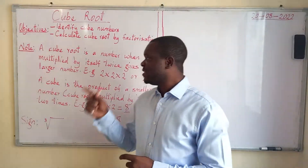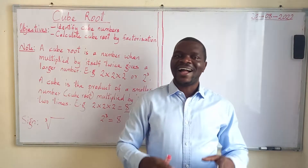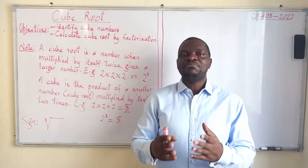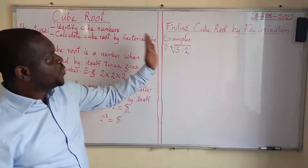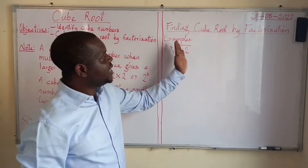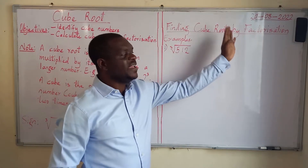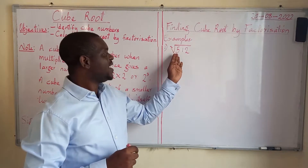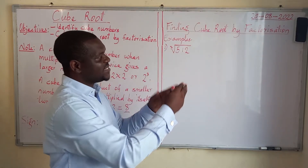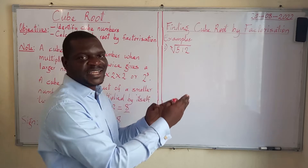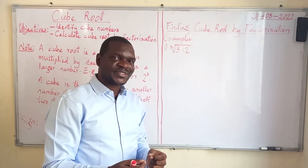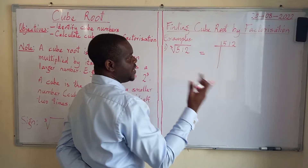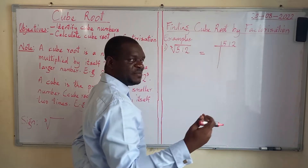Take note that all numbers are cube roots — it means you can multiply any given number by itself two times. But not all numbers are cube numbers. We are going to find the cube root of given numbers by factorization. The first example on the board is: find the cube root of 512. By factorization, the first thing is to set up our table and use prime factors. 512 is an even number — it ends with 2 — so we start with the least prime number, which is 2.